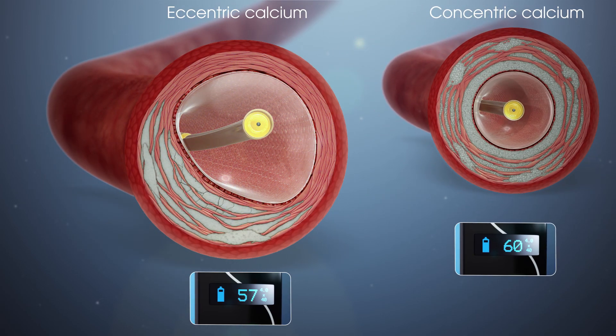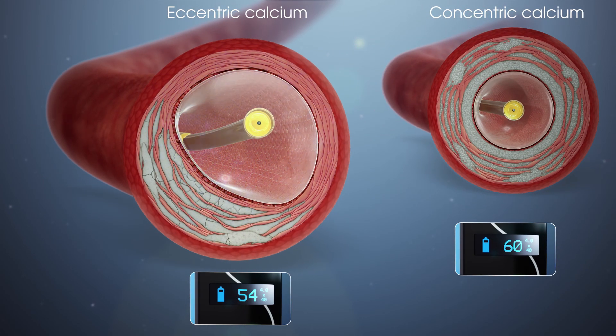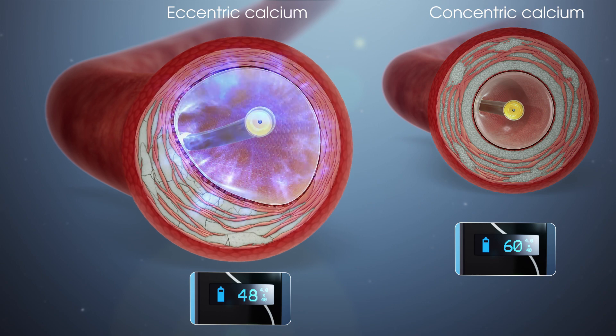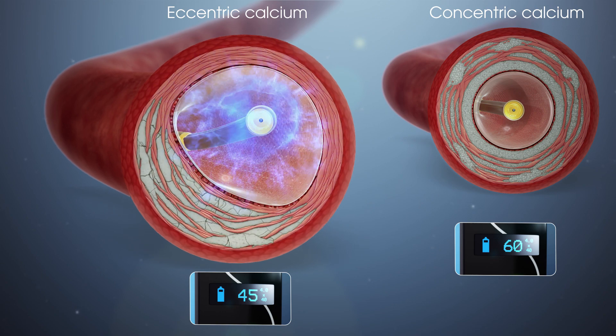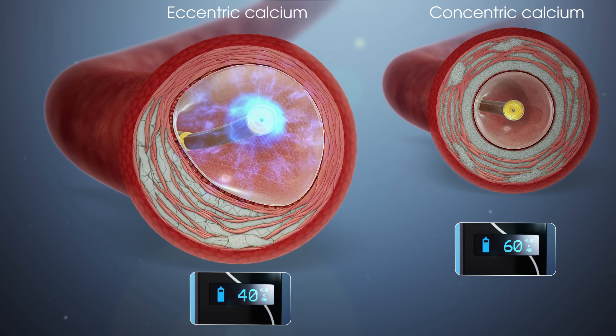In eccentric lesions, most of the waves pass through the soft intima, and there is negligible benefit of reflecting waves.